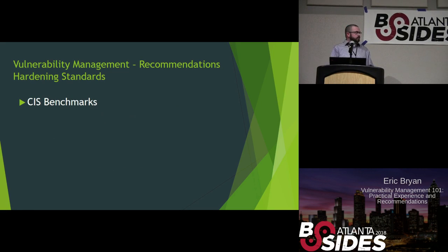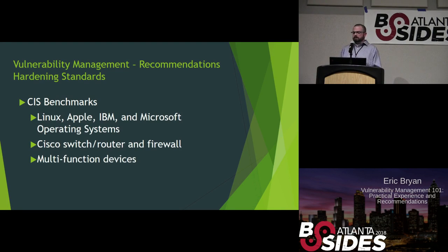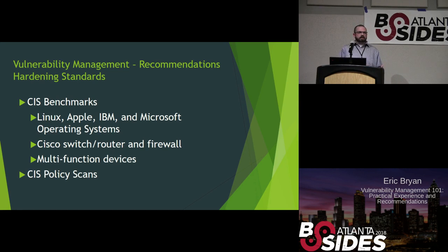Next recommendation: create device hardening standards. The CIS Benchmarks are a good way to do this — they provide specific guidance for hardening assets based on the operating system, and are provided for a wide array of devices: Linux, IBM, Microsoft operating systems, every flavor of Microsoft, iOS, switches, firewalls, routers, and multi-function devices. Some vulnerability scanners like Nexpose and Nessus can run a specific type of credential scan against the device and come back with a pass/fail report for each item. Nessus has a cool offline capability where you can import a config file from an iOS device and it returns a pass/fail report — incredibly beneficial for evaluating device security.